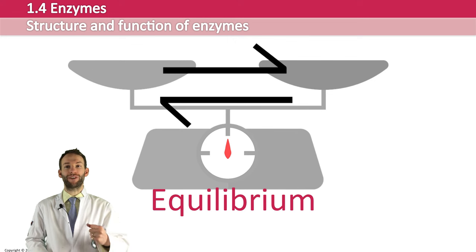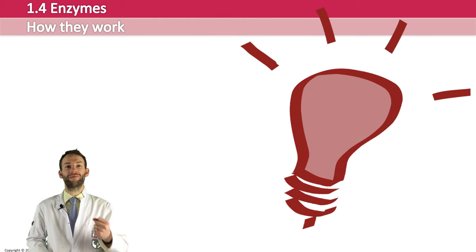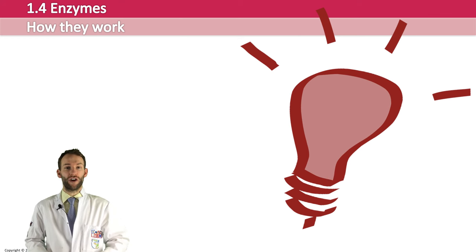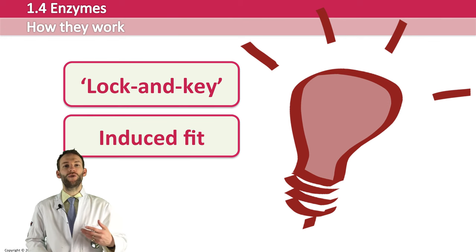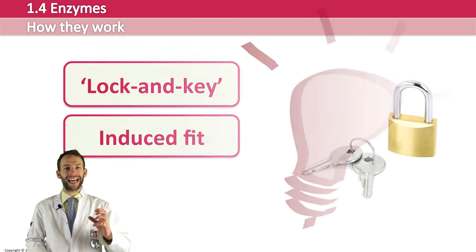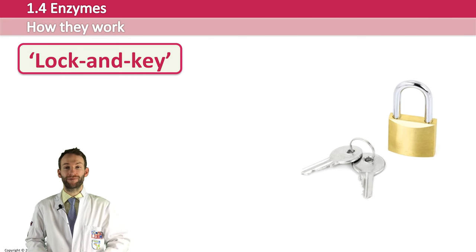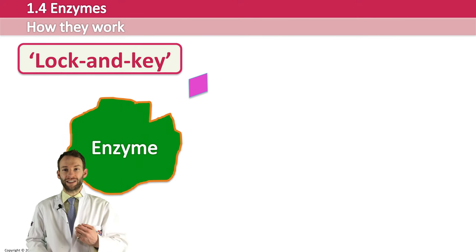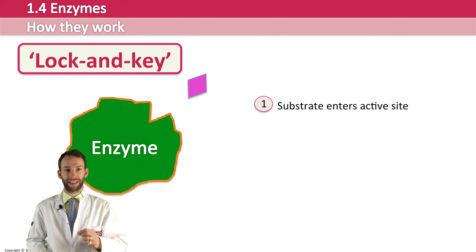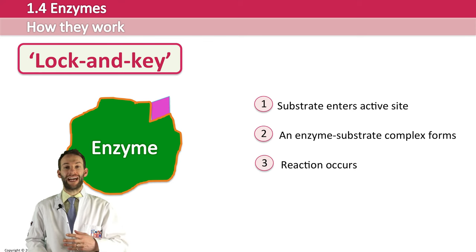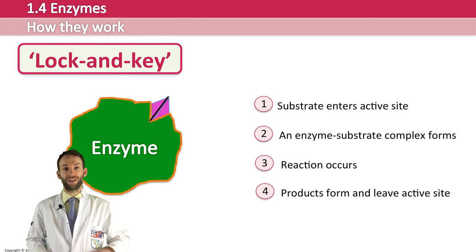Enzymes must bind to something called the substrate to form an enzyme-substrate complex for the reaction to take place. There are two hypotheses you should know about: the lock and key model, and the induced fit. In the lock and key model, the active site has a very specific, rigid shape that is perfectly complementary to the substrate — they fit together like a lock and a key. Looking at the animation: the substrate enters the active site, they are complementary to each other, an enzyme-substrate complex forms, the reaction occurs, and the products are then free to leave. The enzyme can then repeat this process over and over again.